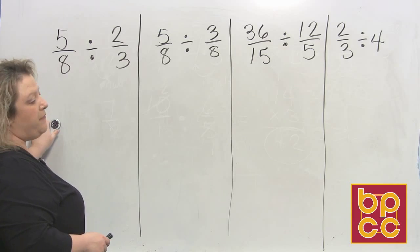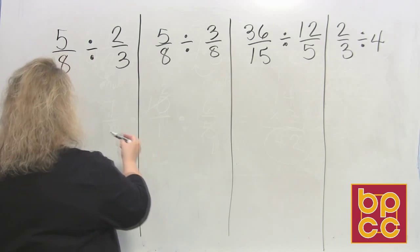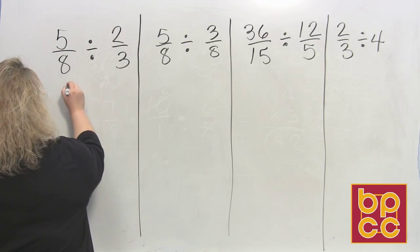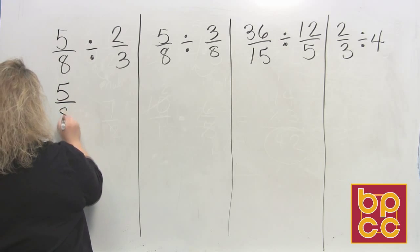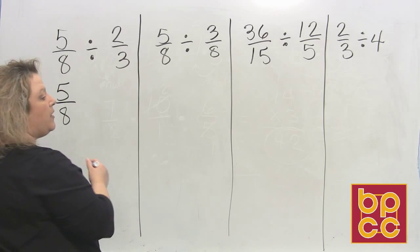The first set of fractions we have is 5 eighths divided by 2 thirds. So we follow the rule, dividing fractions, easy as pi, flip the second and multiply.